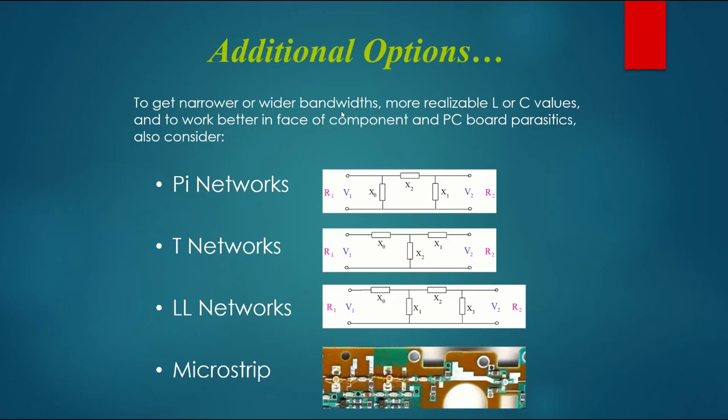Let's look at a few additional options. Common ones are PI networks, T networks, LL networks, and this outlier we'll talk about at the end. The PI network can be interpreted as two back-to-back L networks. We consider X2 as a series combination of X2A and X2B. On the left we have an L network with X0 and X2A, and on the right X1 and X2B. That matches from some high impedance down to an internal low impedance and back up to high impedance. This gives you a more narrow bandwidth, for example.